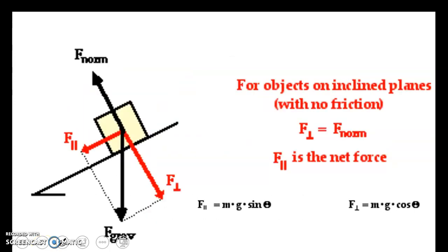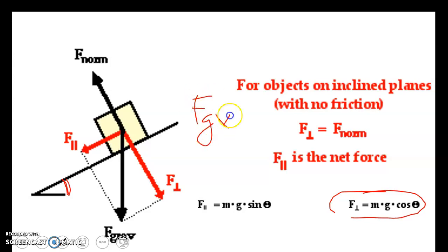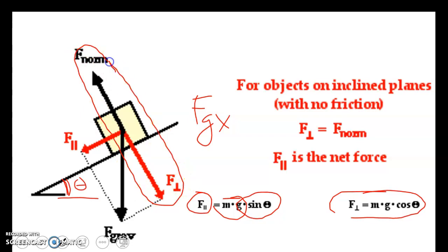The equations for this: force perpendicular equals normal force, which is mass times g times cosine of theta, with theta being the angle of the incline. The parallel component — I'll call it Fg of x a lot — is mg times the sine of theta, or the sine of our incline angle. Remember, normal force and the perpendicular component are the same.